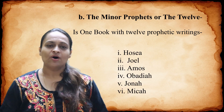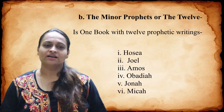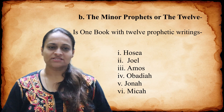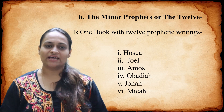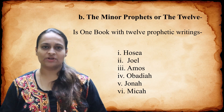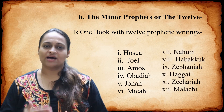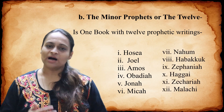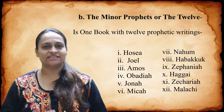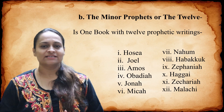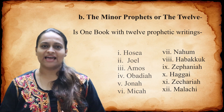The twelve minor prophets are: Hosea, Joel, Amos, Obadiah, Jonah, Micah, Nahum, Habakkuk, Zephaniah, Haggai, Zechariah, and Malachi.